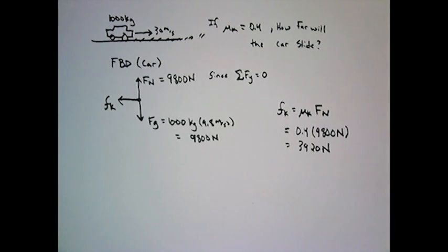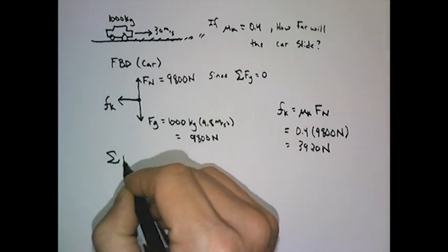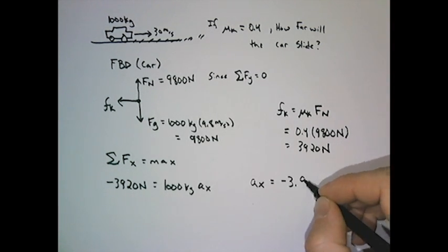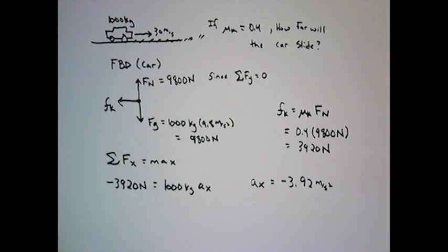Now we can go to the x direction to find the acceleration of the car. In the x direction, the only force is the force of friction. So we can conclude that the car will slow down at a rate of 3.92 meters per second squared.